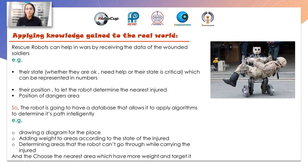Applying knowledge gained to the real world: rescue robots can help by receiving data about wounded soldiers — for example, their state, whether they are okay, need help, or are in a critical condition, represented as numbers — and their position, to let the robot determine the nearest injured person in a dangerous area. The robot will have a database that allows it to apply an algorithm to determine its path intelligently — for example, drawing a diagram of the place, adding weights to areas according to the state of the injured, determining areas the robot can pass through while carrying the injured, and drawing the nearest areas with the most weight.